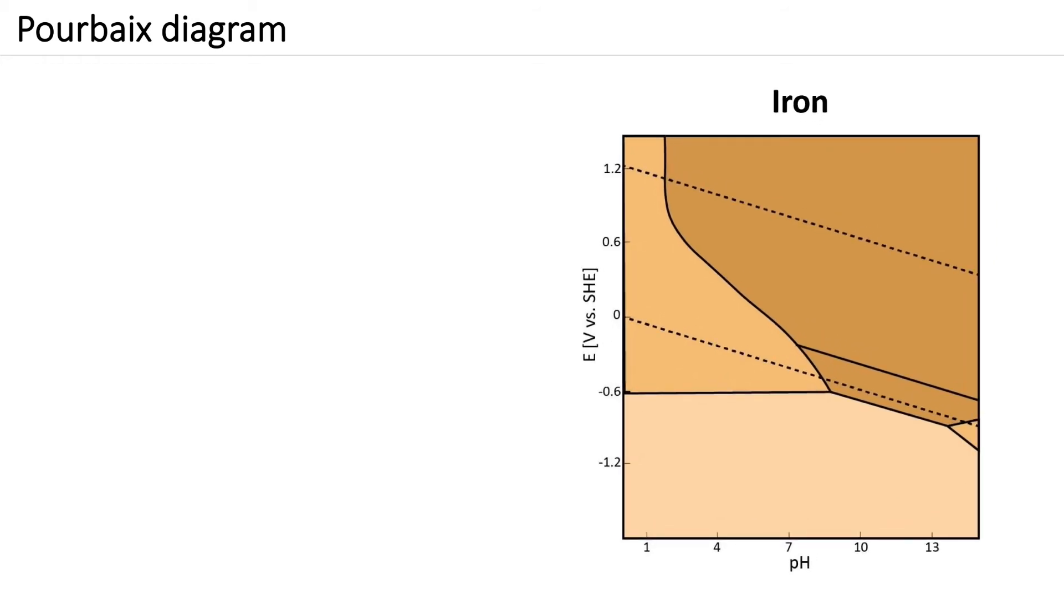The lines in this diagram represent the equilibrium state and the areas between the lines are the different stability regions. The immunity region is where the metal is stable. The corrosion region is where the metal ions are the stable species. And the passivity region is where insoluble metal oxides or oxyhydroxides are the stable species.